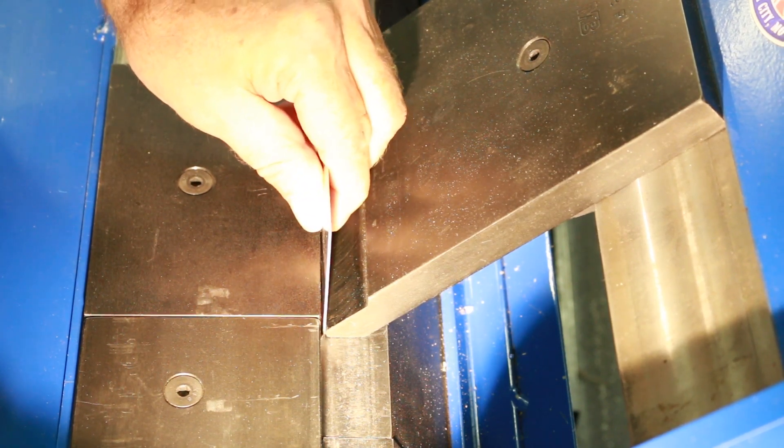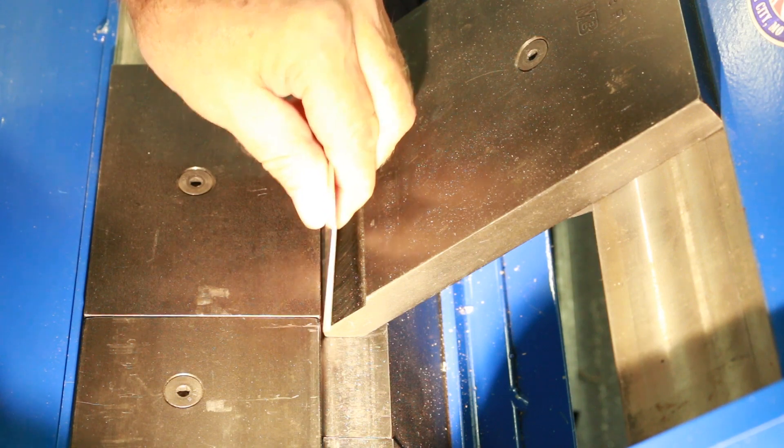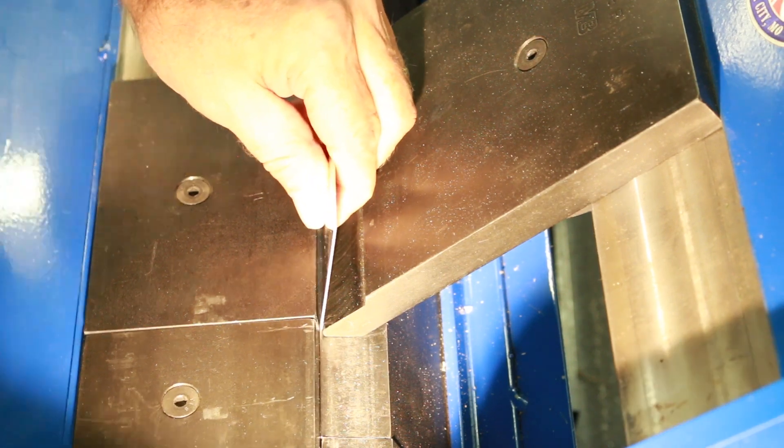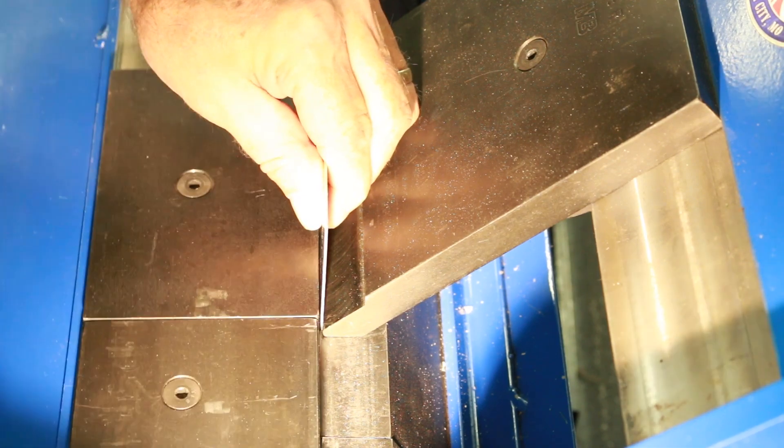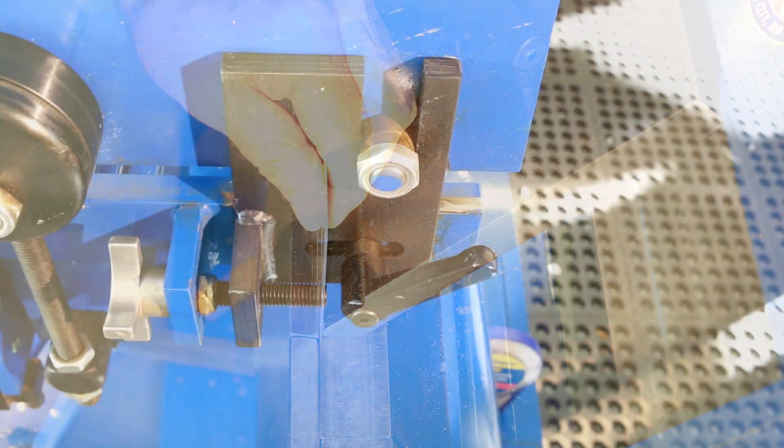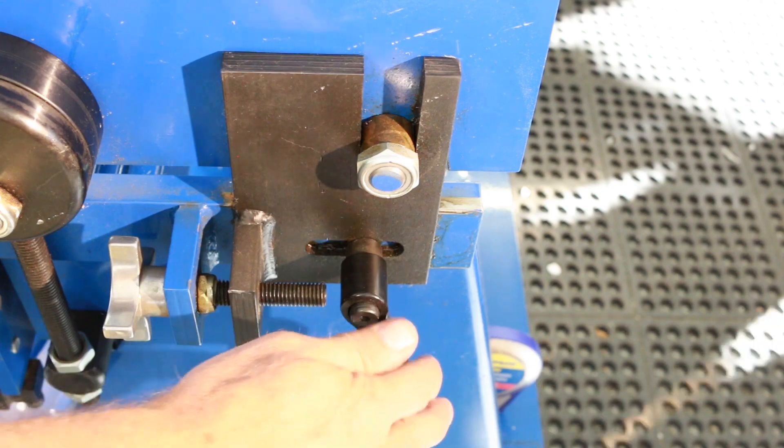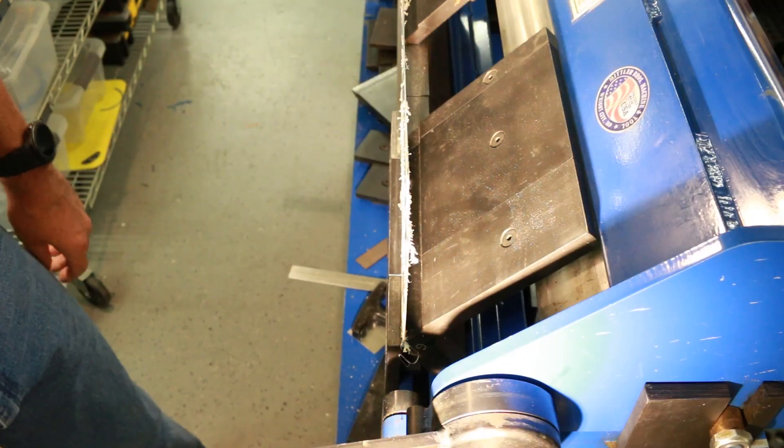Having excessive space will typically result in a larger radius than the radius of the bending finger. This of course will throw off all of your bending calculations and subsequently the final dimensions of your bent component. Once we have adjusted the finger setback on both sides of the brake, we will re-engage the bracket locks and we're now ready to begin our bending of our piece of sheet metal.